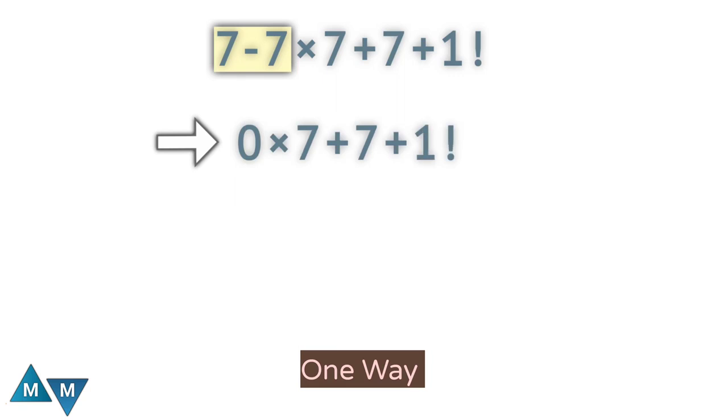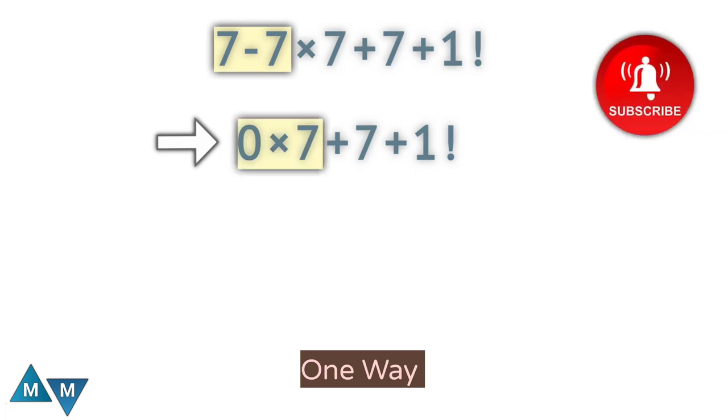Then we'll see, in mathematics, 0 times 7 gives 0. And it becomes 7 plus 1 factorial.